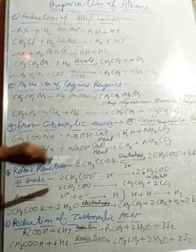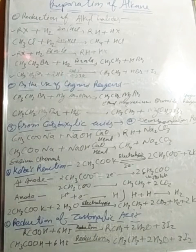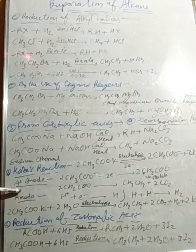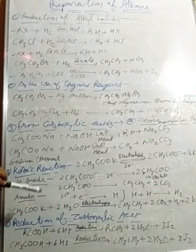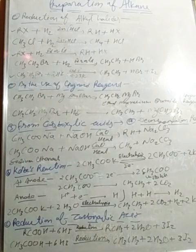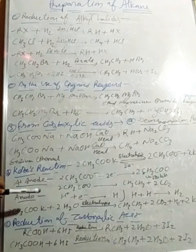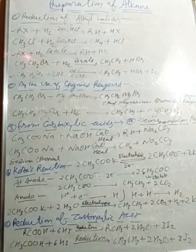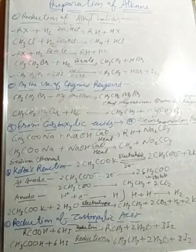The next reaction is Kolbe's reaction — the electrolysis of sodium ethanoate. On electrolysis, an unstable ethoxide is formed at the anode, which releases an electron. From this unstable ethoxide, ethane and carbon dioxide molecules are formed. At the cathode, hydrogen ions gain electrons to form hydrogen atoms, which combine to release hydrogen gas.